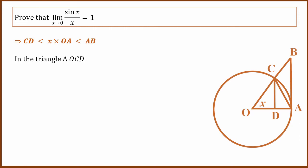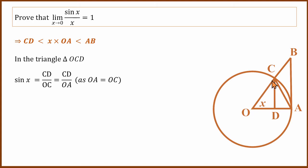In the triangle OCD, sine x is opposite side by hypotenuse. In this right triangle, x is the angle, CD is the opposite side, and OC is the hypotenuse. But OC is the radius, equal to OA. So sine x equals CD divided by OA, meaning CD equals OA times sin x.